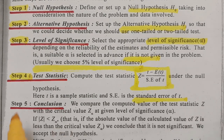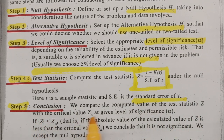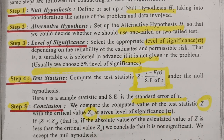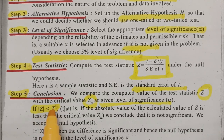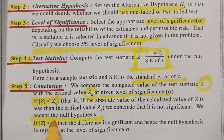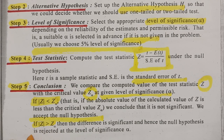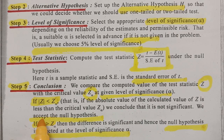Step 5 is the conclusion. We compare the computed value of the test statistic Z with the critical value Z alpha at the given level of significance. If the computed value of Z is less than Z alpha, we conclude that it is not significant and we accept the null hypothesis. If the absolute value of Z is greater than Z alpha, then the null hypothesis is rejected.